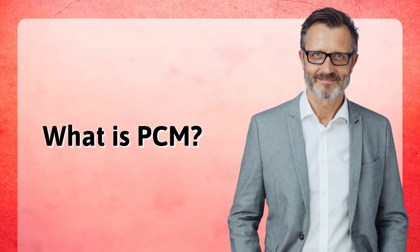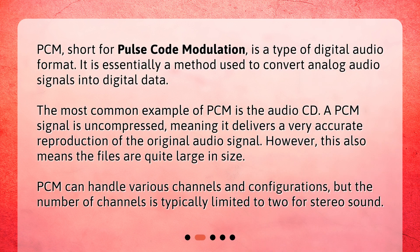What is PCM? PCM, short for Pulse Code Modulation, is a type of digital audio format. It is essentially a method used to convert analog audio signals into digital data. The most common example of PCM is the audio CD. A PCM signal is uncompressed, meaning it delivers a very accurate reproduction of the original audio signal. However, this also means the files are quite large in size. PCM can handle various channels and configurations, but the number of channels is typically limited to two for stereo sound.